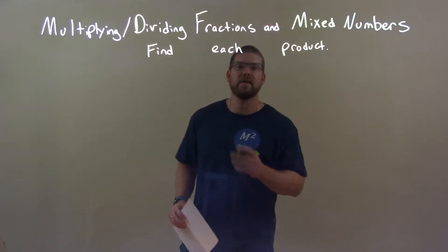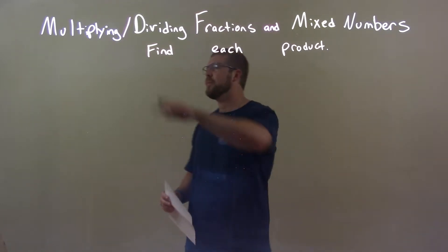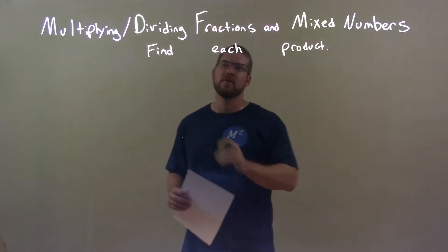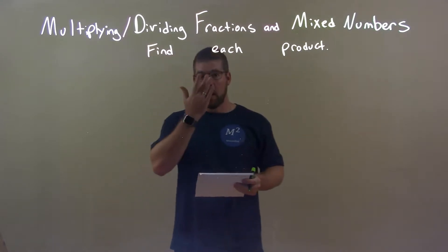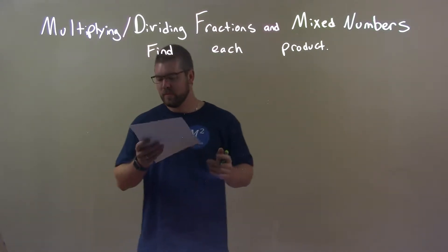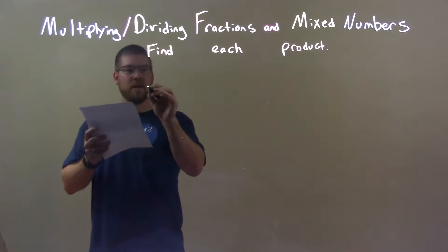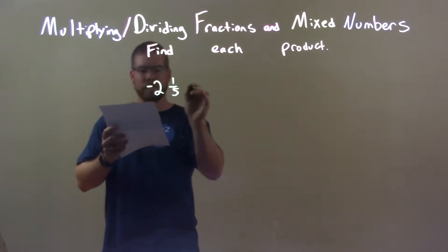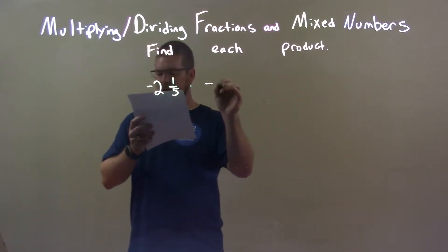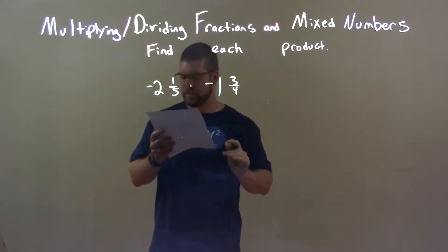Hi, I'm Sean Gann, and this is MinuteMath. Today we're learning about multiplying and dividing fractions and mixed numbers, and finding each product. So, if I was given these numbers: negative 2 and 1 fifth times a negative 1 and 3 fourths.